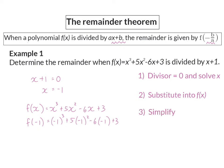And the final step is to simplify. And here, when I simplify, I will get 13. So, the remainder theorem says that the remainder will be equal to 13 if I divide the function by x plus 1.